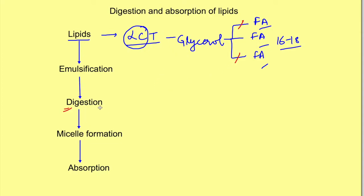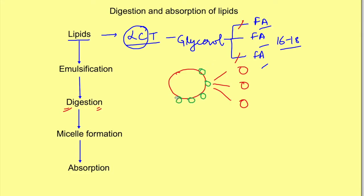For digestion to occur, large lipid molecules should be broken down into smaller molecules. This is because our digestive enzymes for lipids — the lipase, which is the main enzyme — act only on the surface of the fat globule. So to digest a big fat globule it will take a long time. Breaking them into smaller particles allows the enzymes to act on the surface of all these smaller particles, speeding up digestion. That process is known as emulsification.